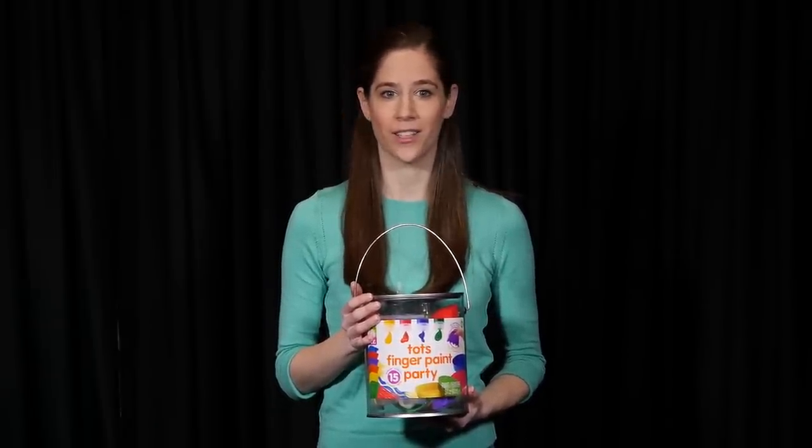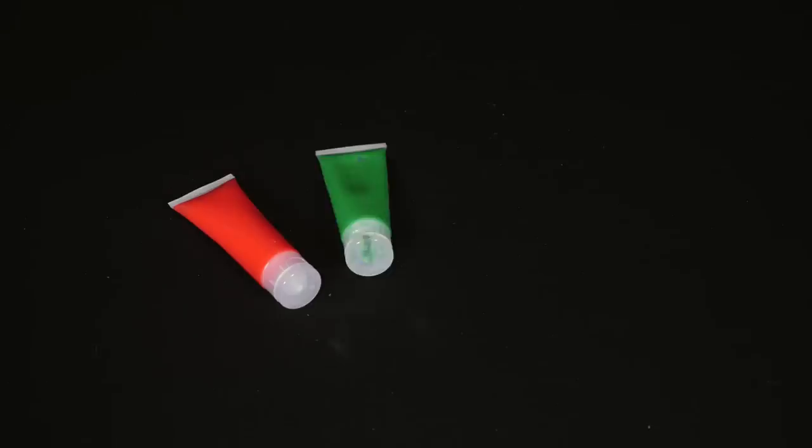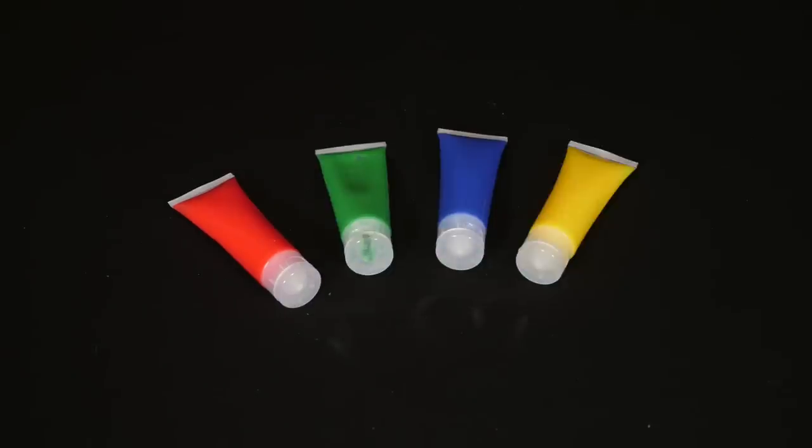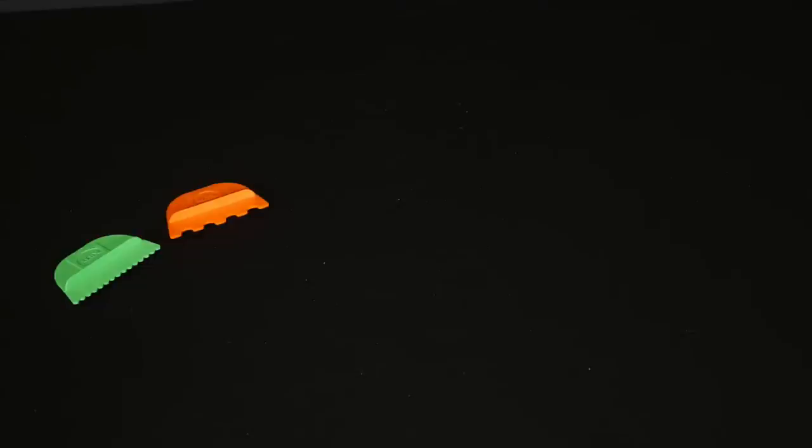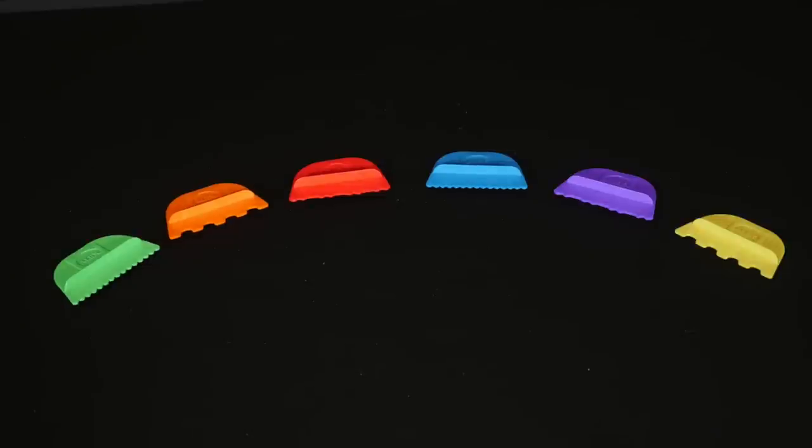this creative can of color contains four bright paint tubes in red, blue, green, and yellow, four shaping plates for holding paint, six shaping tools, and an apron to keep the young artist clean.